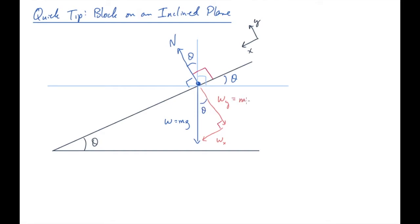Now we can write that the y component of the weight has a length of mg cosine theta, it's in the negative direction in this case, and the x component has a length of mg sine theta.